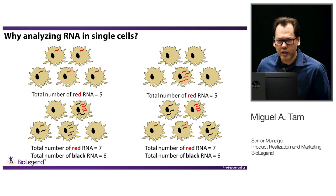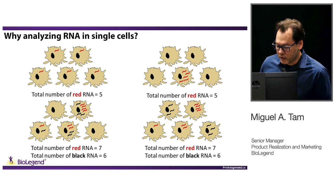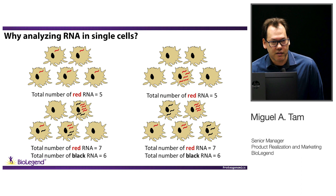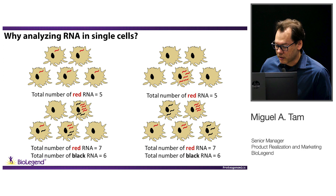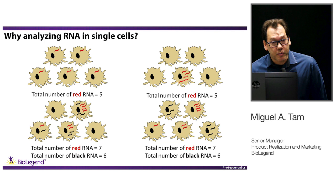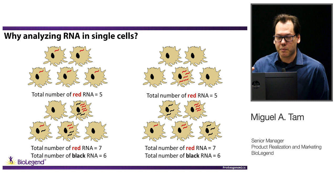If we complicate that further with another molecule of RNA — say the black RNA — and we do the same population analysis, we might come up with numbers like seven molecules of red RNA and six molecules of black RNA. If you do the same analysis on a similar population, you may come up with the same numbers, but in reality these two populations are quite different: here the cells are co-expressing these molecules, while in the other population the cells express only one type of mRNA. That's quite important because how cells respond to a treatment depends on the molecules they express on the surface.